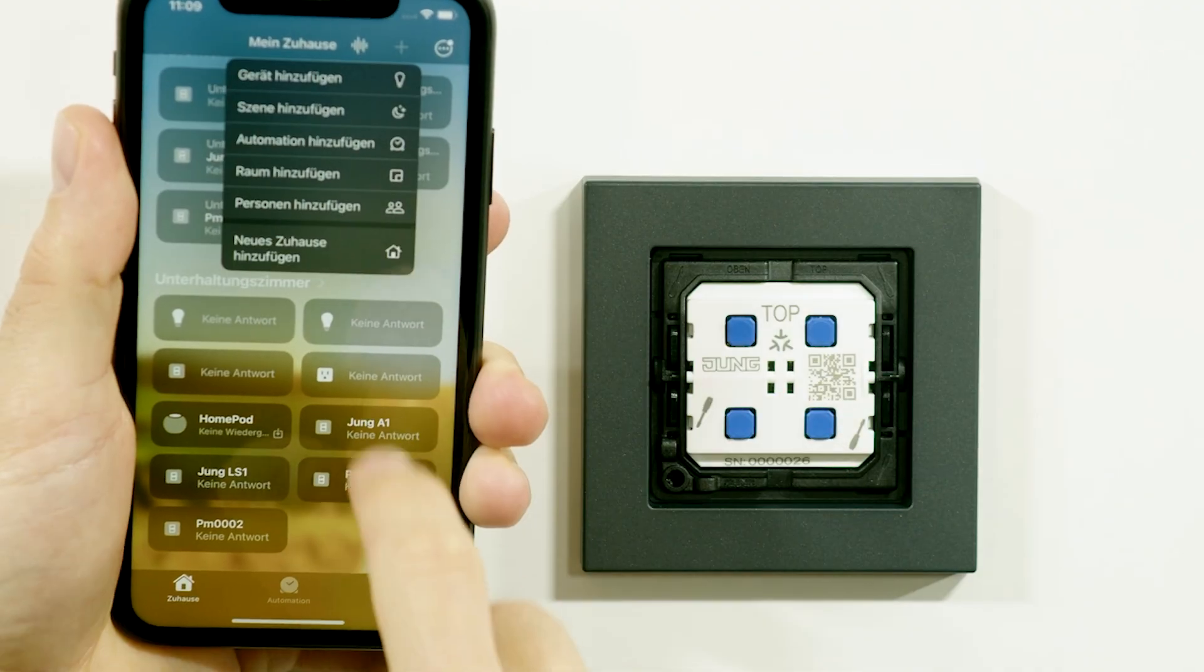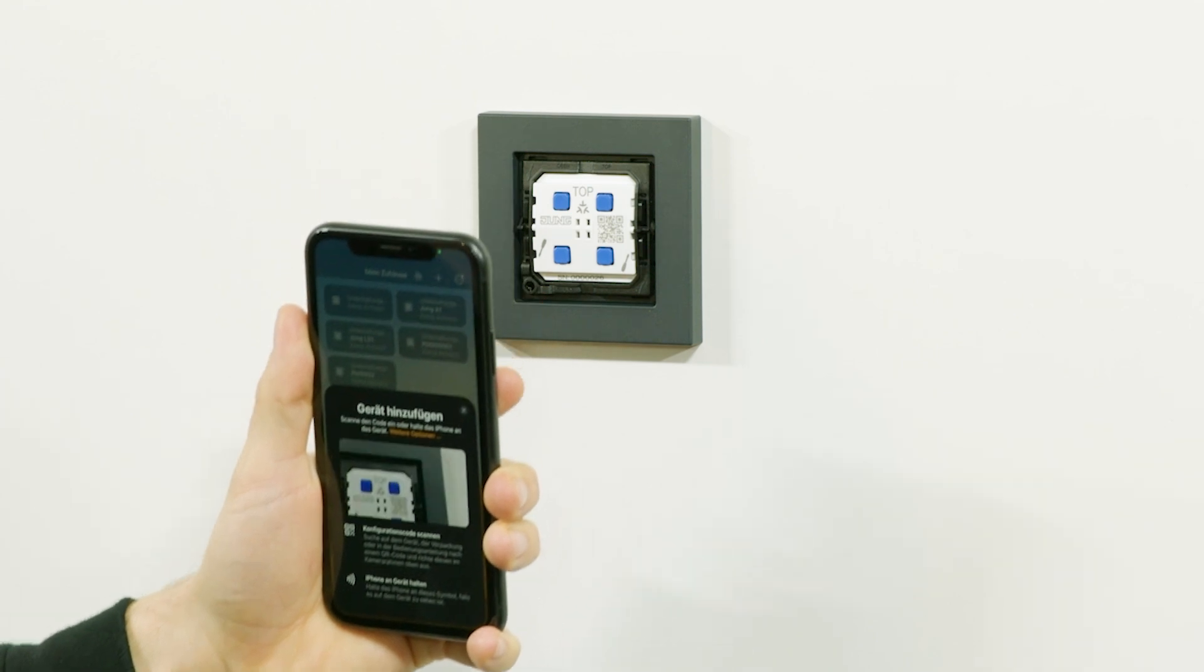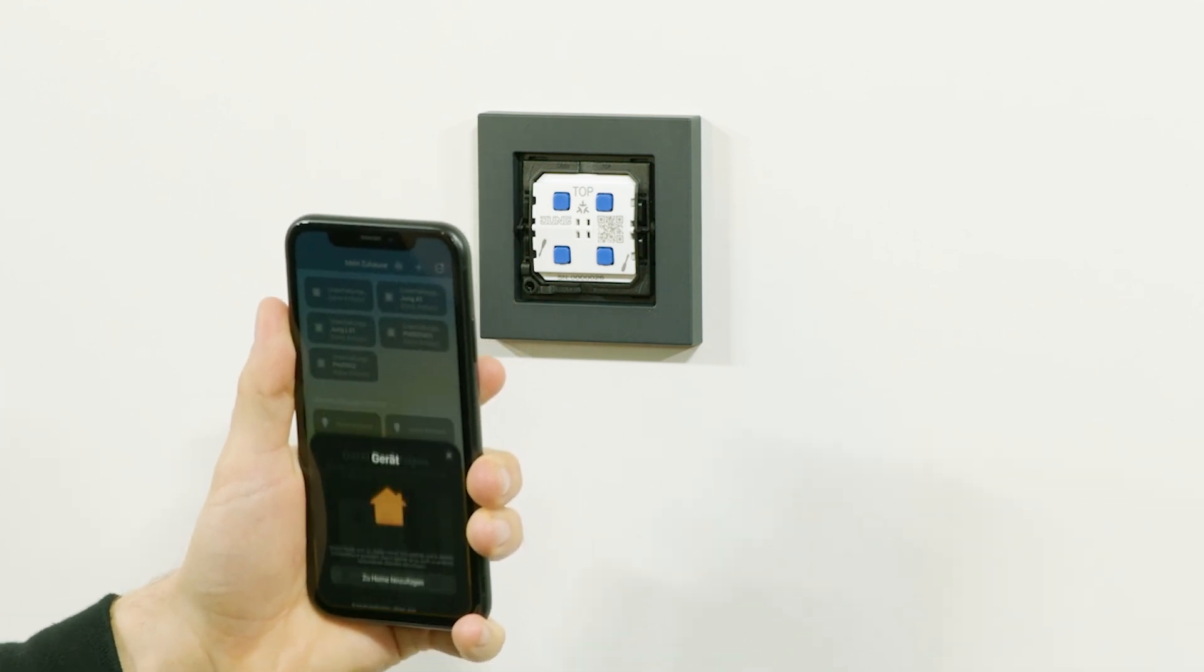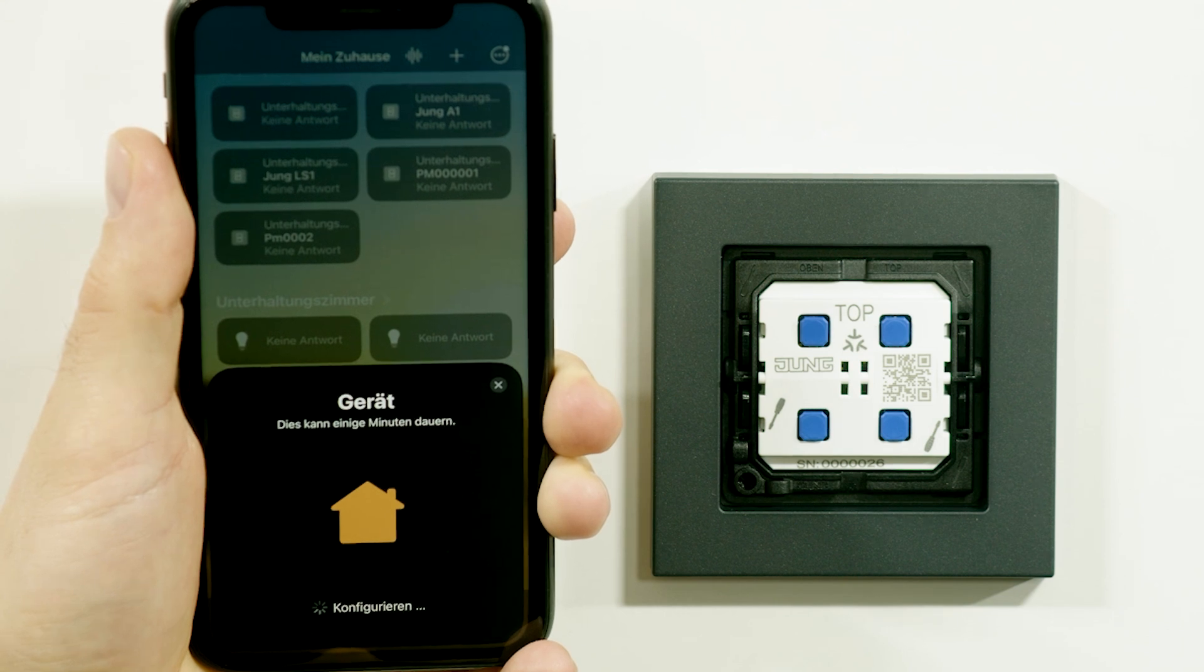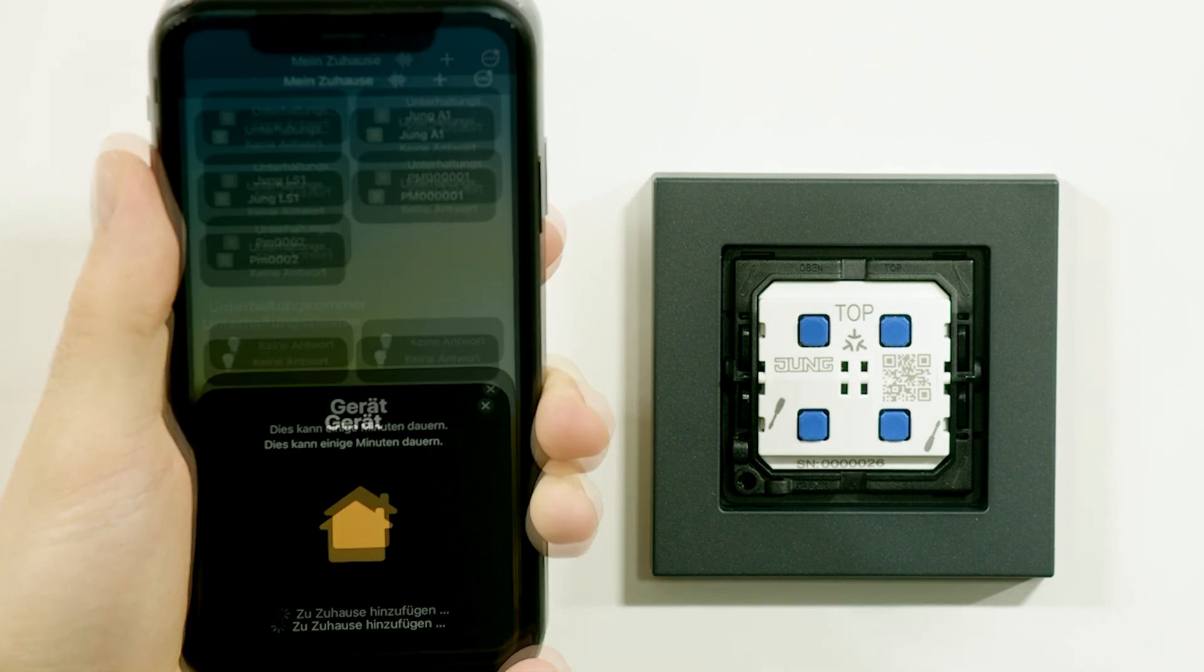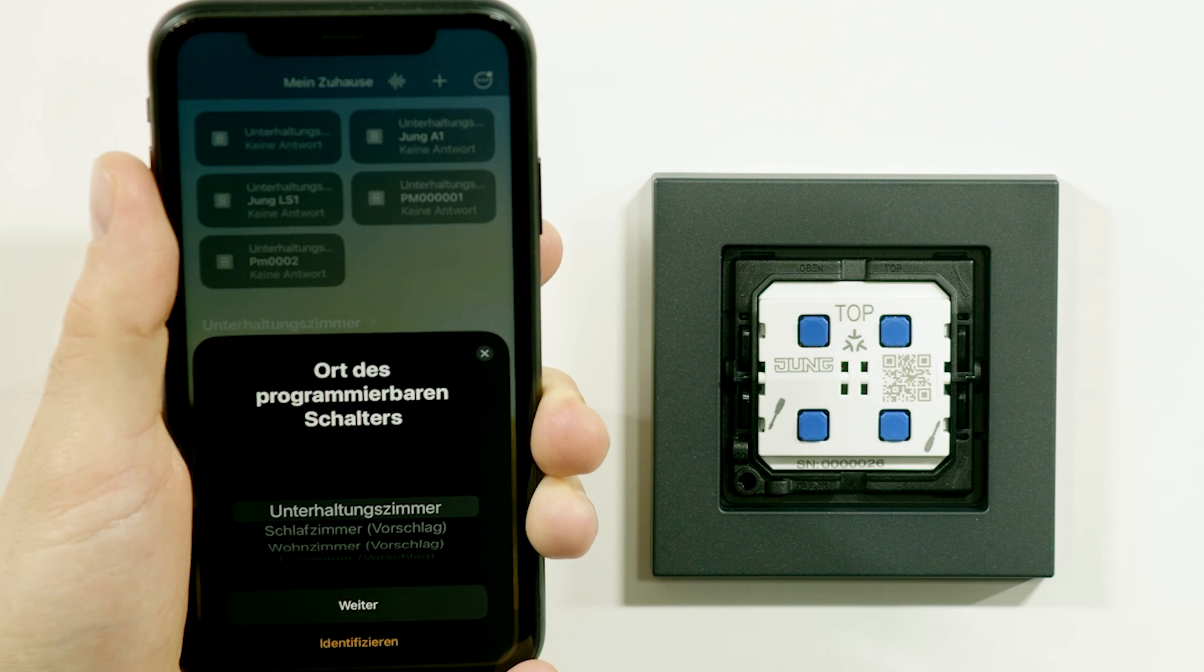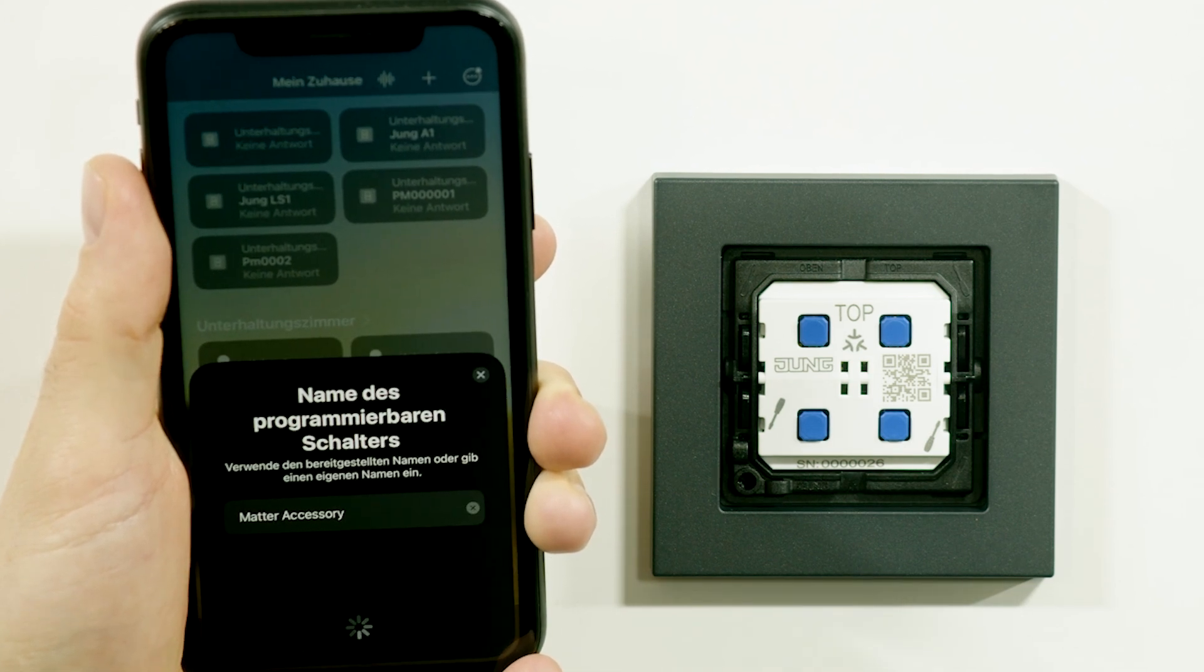Add the META push button to your smart home system by scanning the QR code of the radio module with your end device. It may take a few minutes to add the new device. Follow any further instructions in the app of your respective smart home provider.